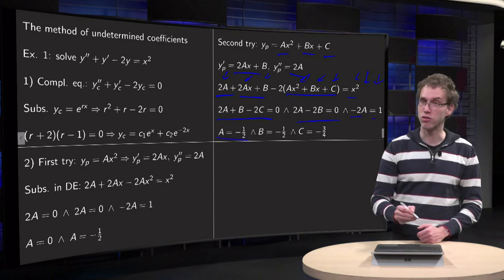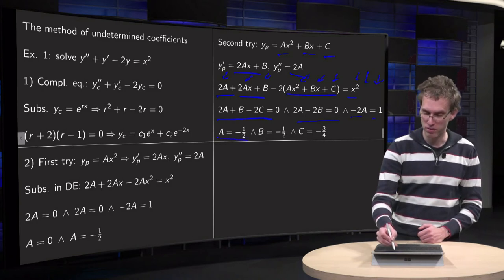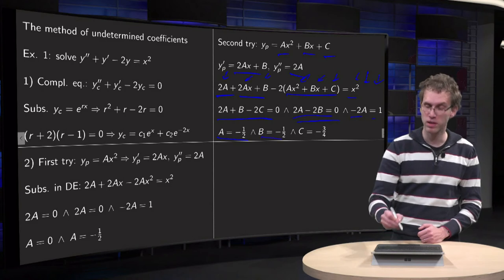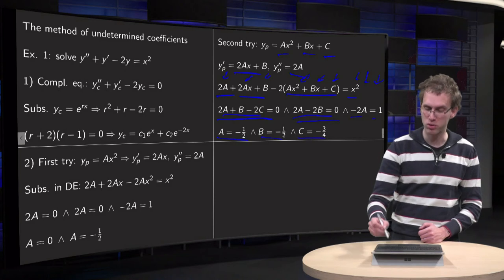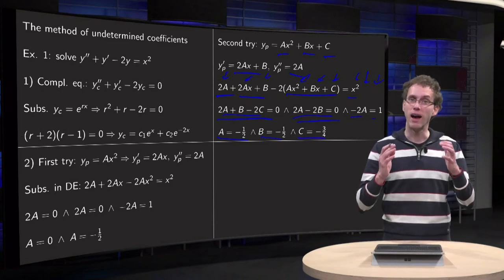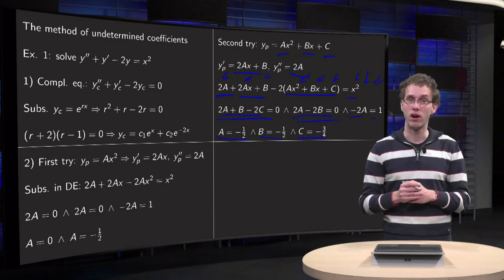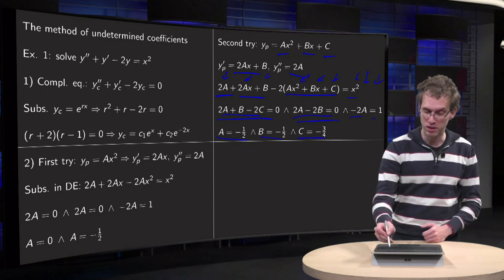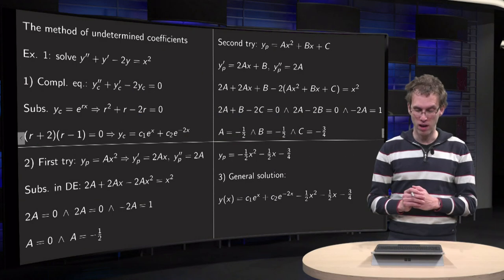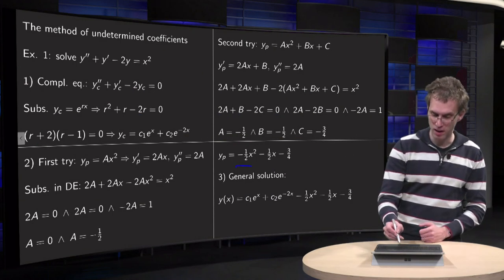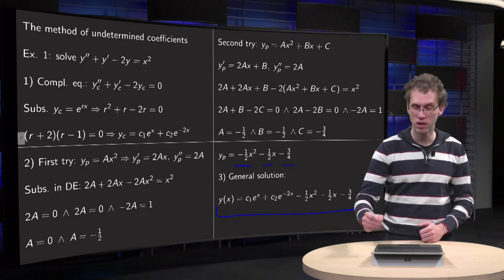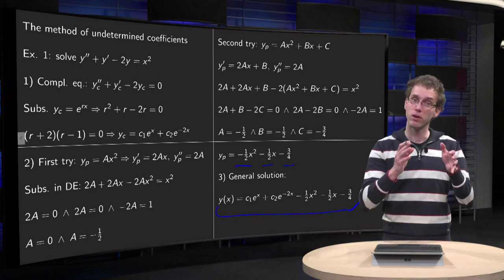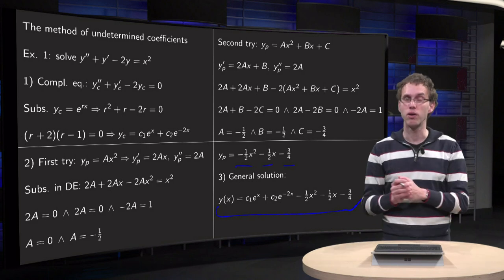The last condition gives a = -1/2. The second condition gives a = b, so b = -1/2 as well. The first condition then tells us c = -3/4. We can satisfy all three conditions, which means this yp does work. We find yp = -1/2 x² - 1/2 x - 3/4. We have found a particular solution, so we also find the general solution, which is the sum of the complementary solution and our particular solution.